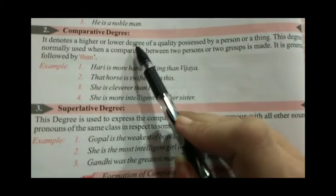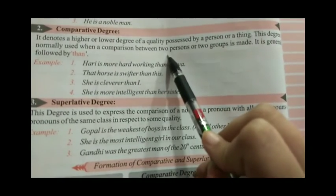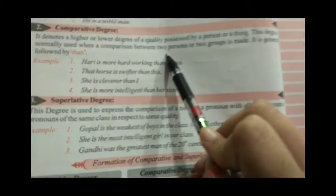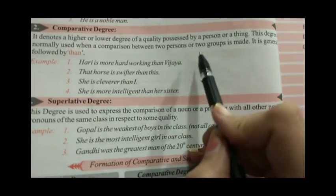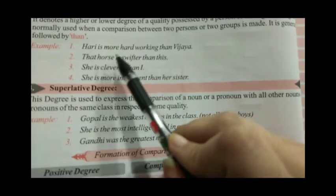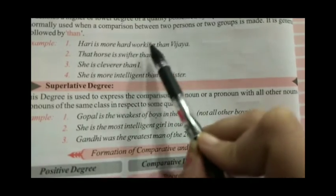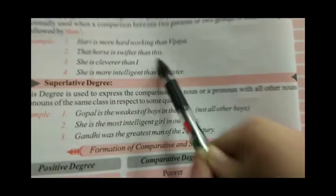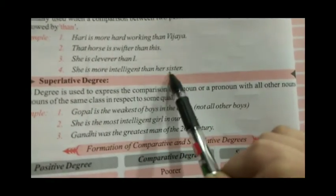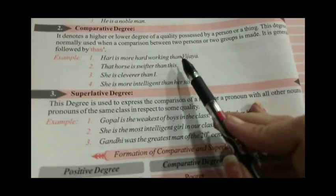The second degree is comparative degree. It denotes a higher or lower degree of a quality possessed by a person or a thing. This degree is normally used when making a comparison between two persons or two groups, and it is generally followed by 'than'. For example: 'Harry is more hardworking than Vijay,' 'That horse is swifter than this,' 'She is cleverer than I,' 'She is more intelligent than her sister.' यहां पर दो persons के बीच comparison हो रहा है — इसे हम comparative degree कहते हैं।